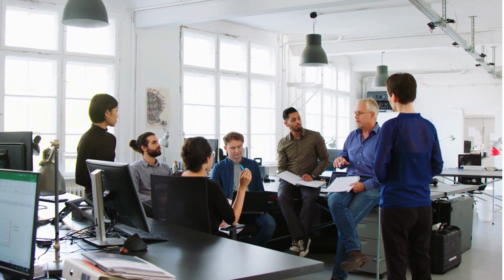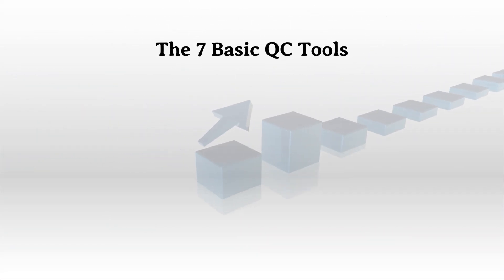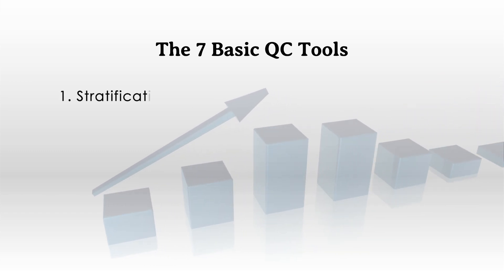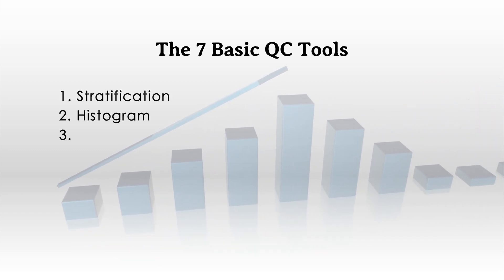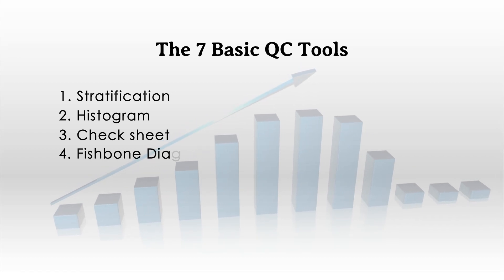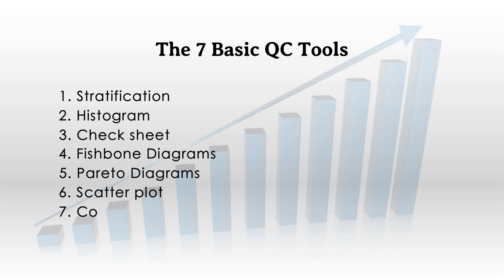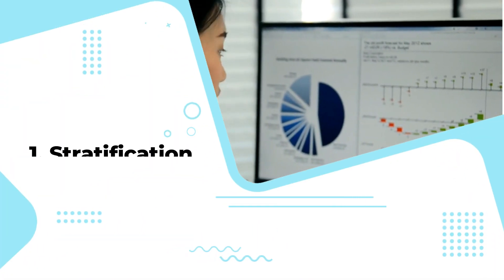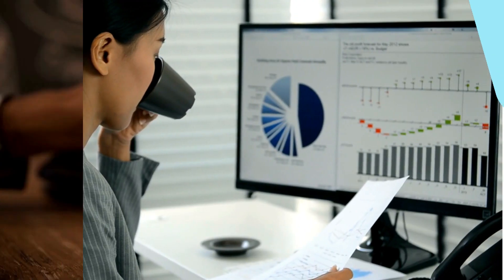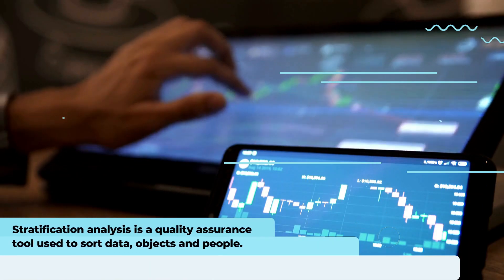Here are the seven basic QC tools: stratification, histogram, check sheet, fishbone diagrams, Pareto diagrams, scatter plot, and control charts. These tools deal with facts or data, not opinions, and 95% of problems can be solved with the use of these tools.